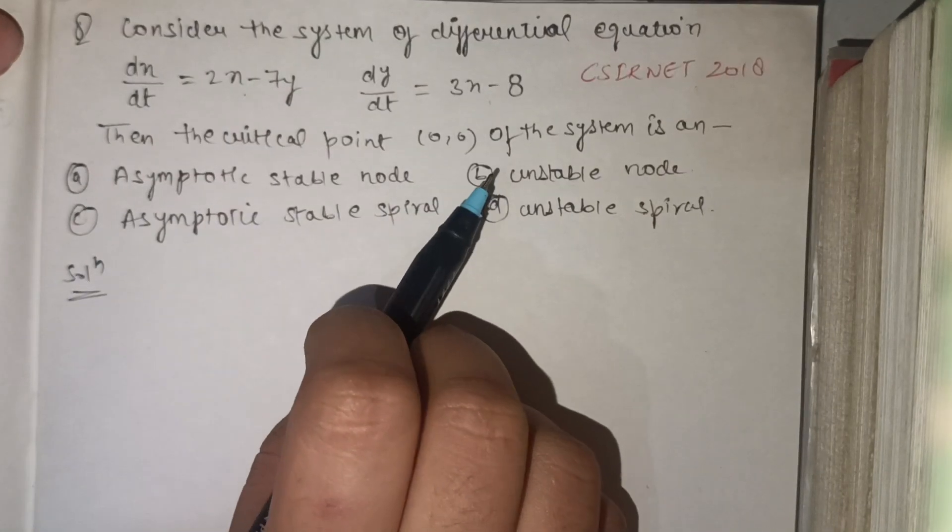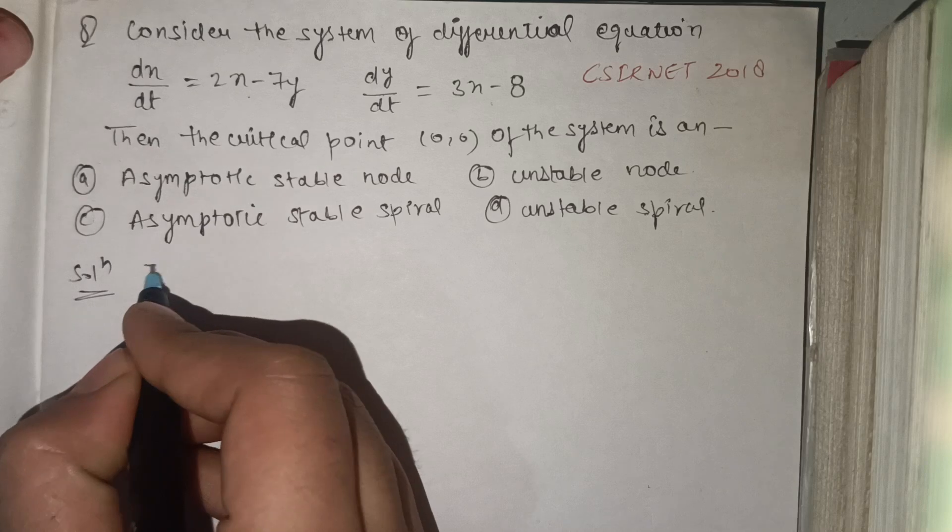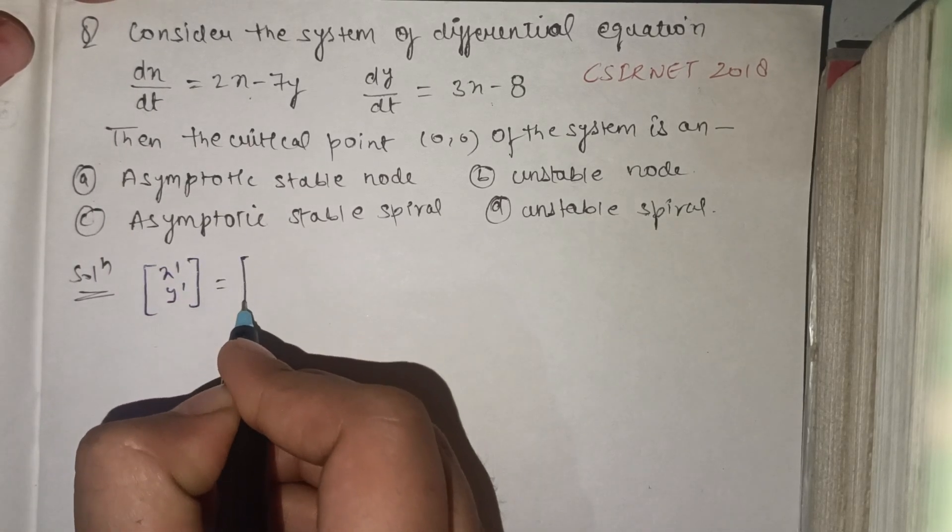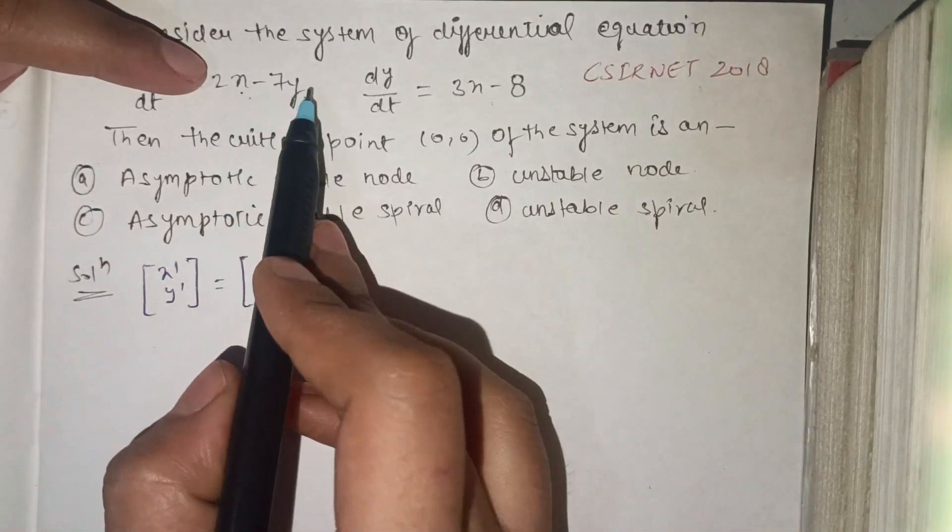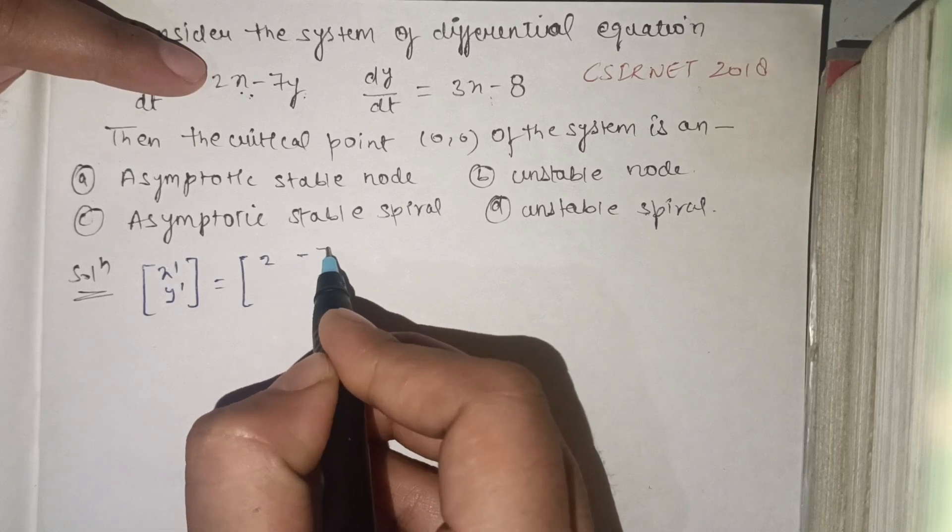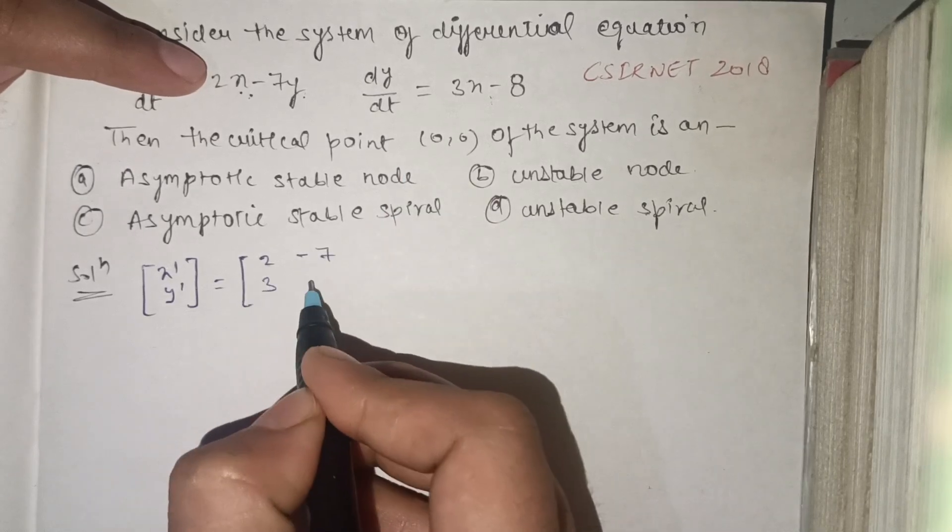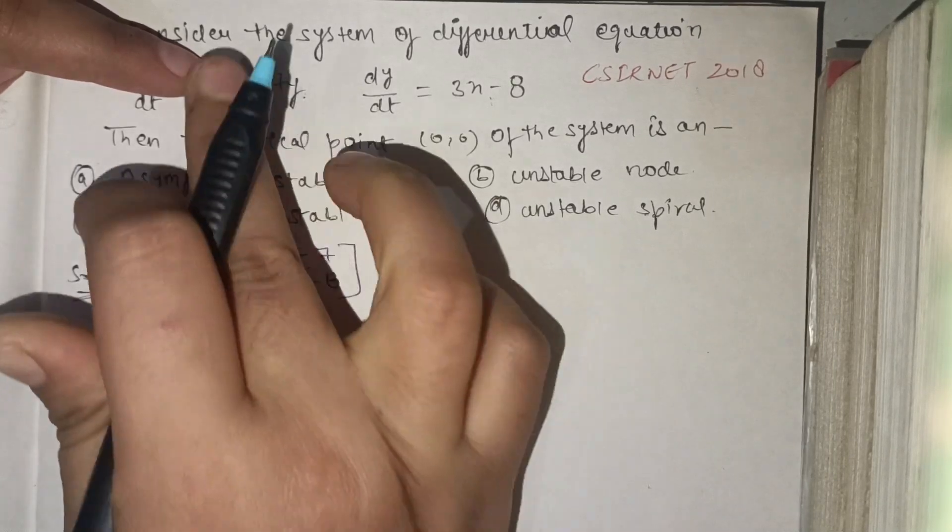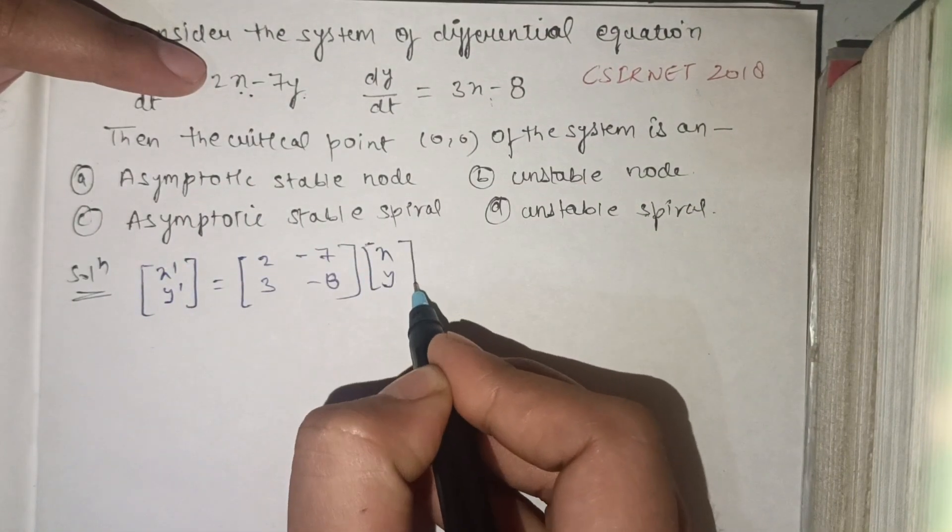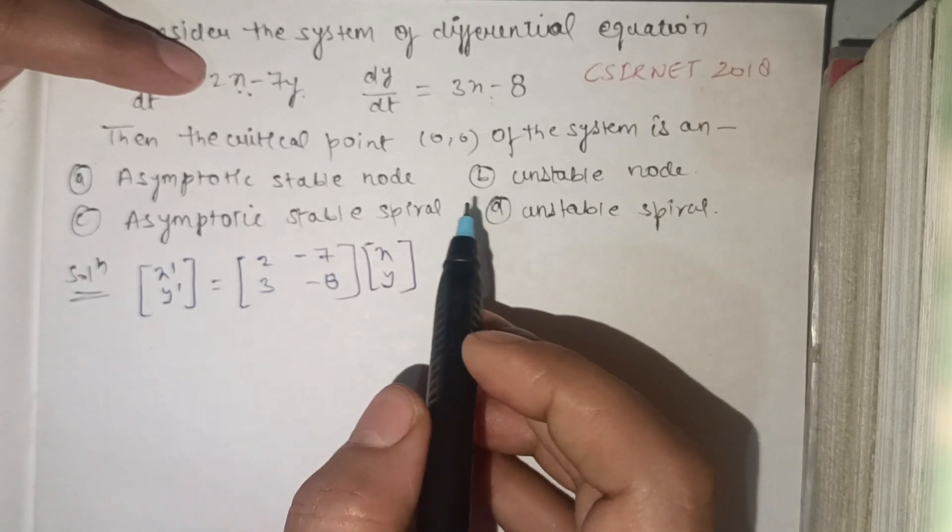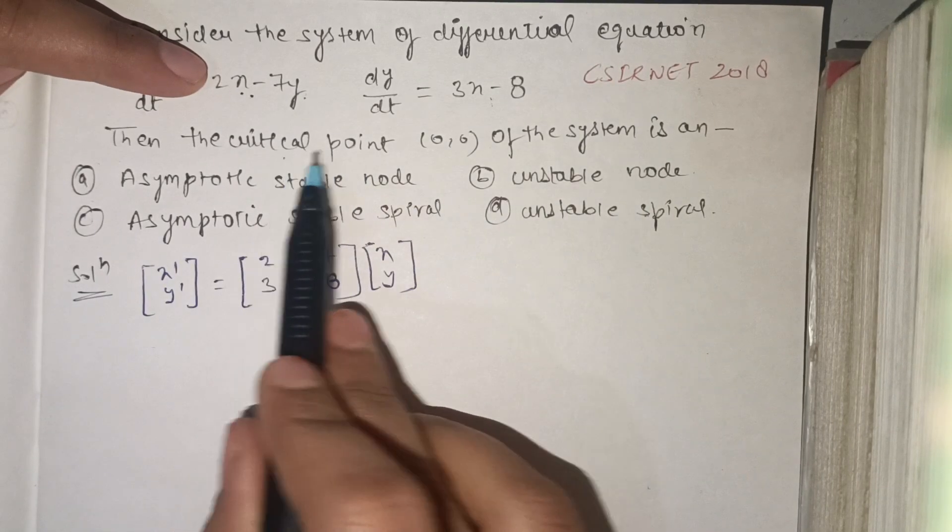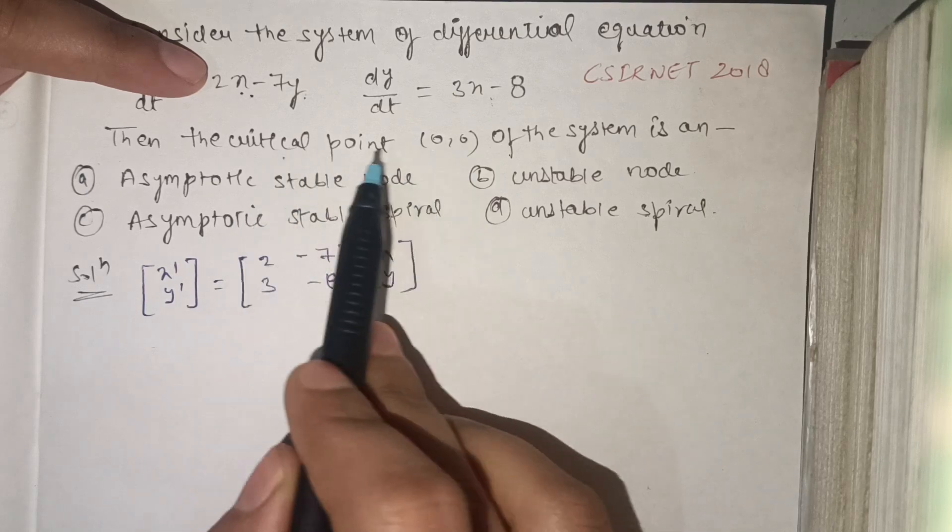If we have to solve this, consider that dx/dt, dy/dt equals... Here we have to put this equation in matrix form: 2, -7, 3, -8. By these two systems we form this matrix with variables x, y. For finding the roots at the critical point, we have to find the eigenvalues of this equation.